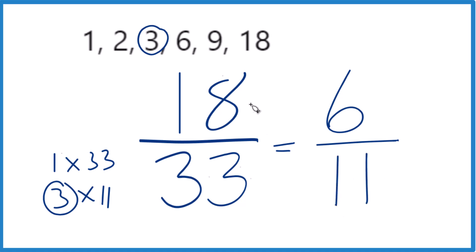So when you simplify the fraction 18 over 33, you end up with 6 over 11. And these are equivalent fractions. They have the same value. They're just written differently. 6 over 11, that's the simplified form of 18 over 33.